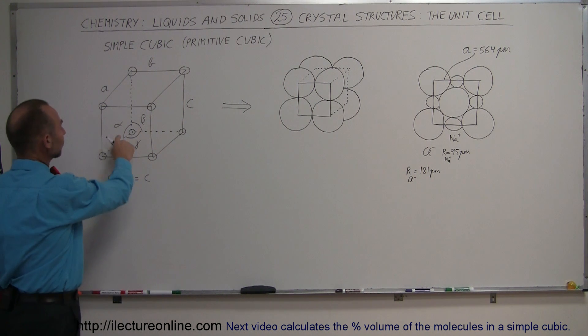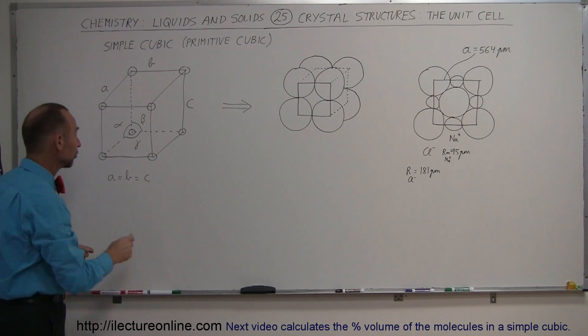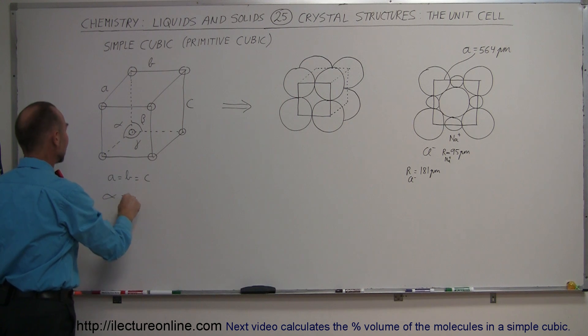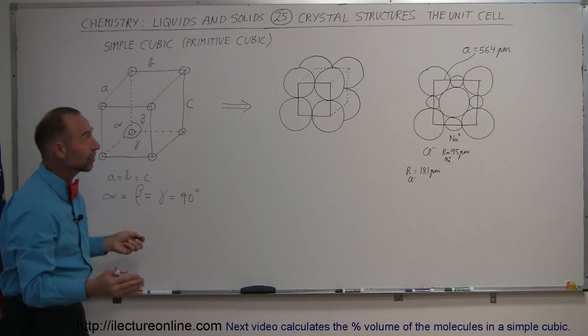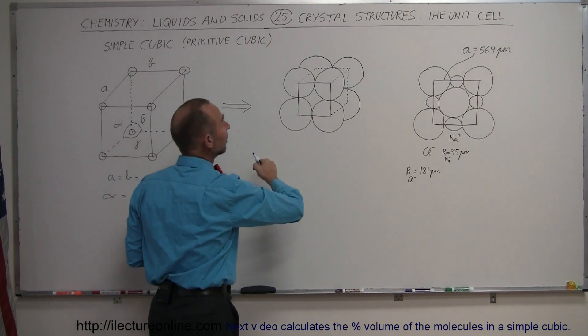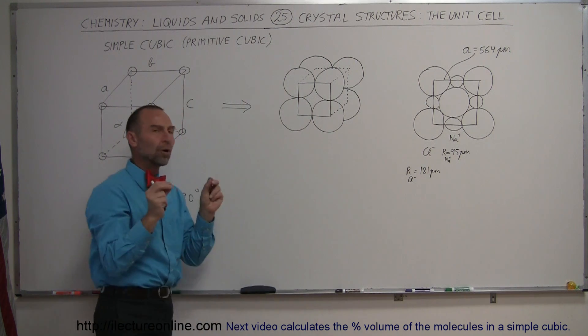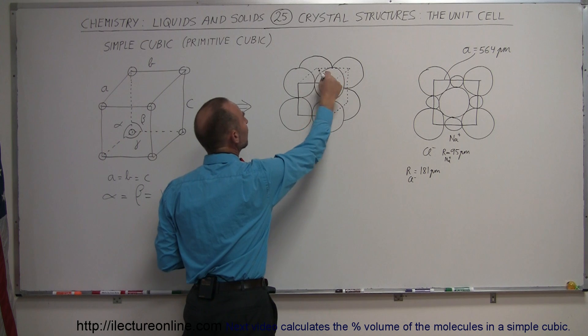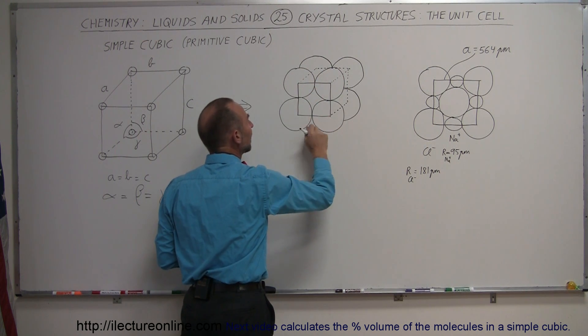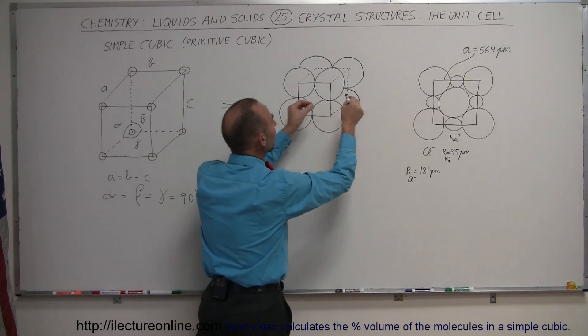So I have a simple cubic structure, and also the angles are all 90 degree angles, so the faces relative to each other are at 90 degrees from each other. So we can say that the angle alpha is equal to the angle beta is equal to the angle gamma is equal to 90 degrees, so we have a perfect cubic structure. And so, for example, atoms may be packed together like this.